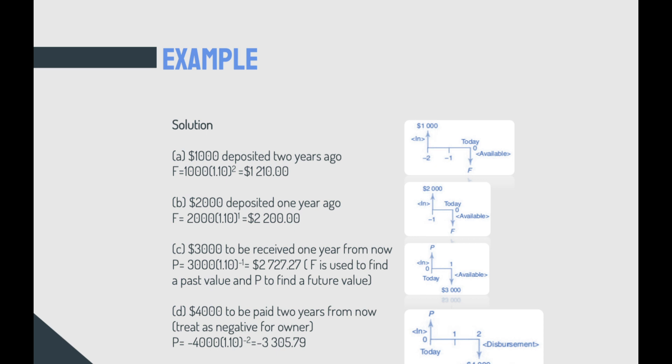Now, if you have $4,000 paid two years from now, you can treat the $4,000 as a negative value, having the conviction that paying is negative. P would be minus $4,000 multiplied by 1.1 to the power of minus 2, would give you minus $3,305.